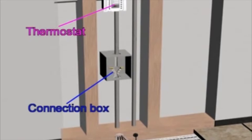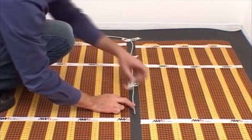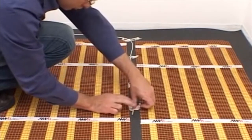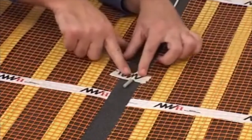direct sunlight, windows, doors or anything that could affect accurate temperature readings. Install electrical conduits to both the connection box and thermostat box. Install the floor temperature safety sensor between two heating mats at least 20 inches, 50 centimeters, from the wall.